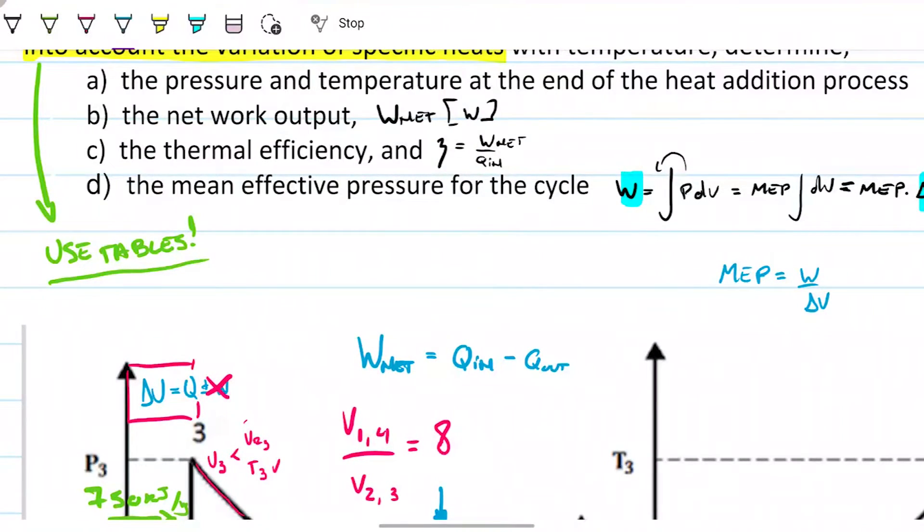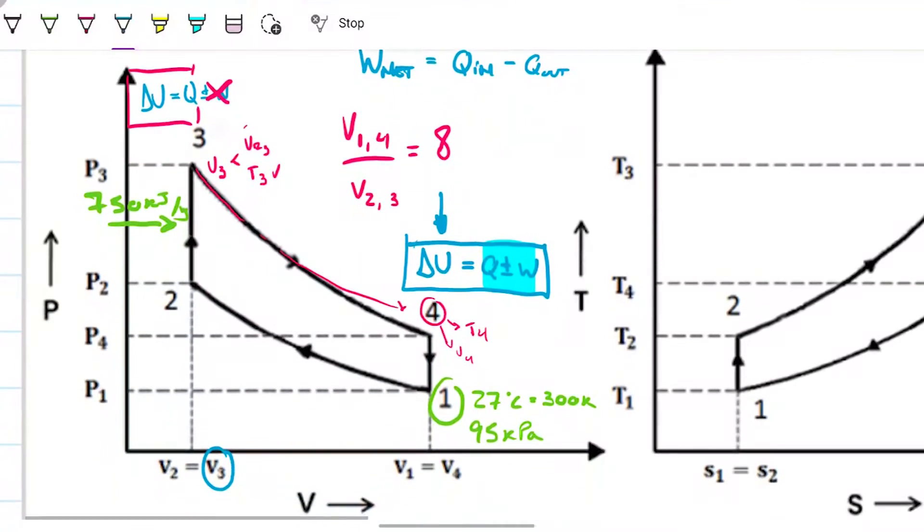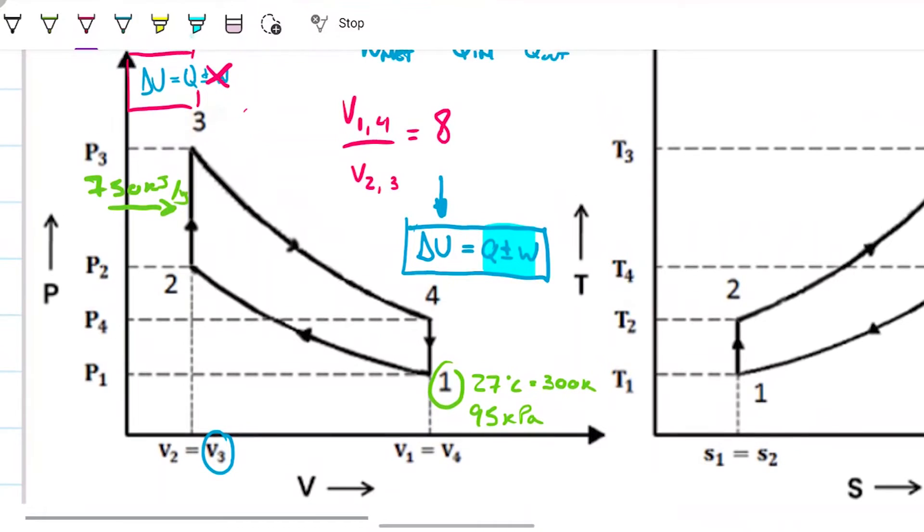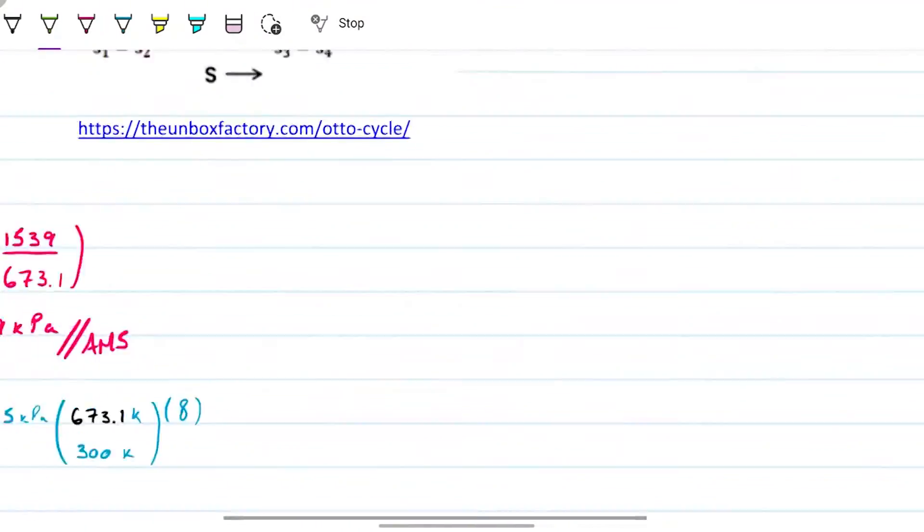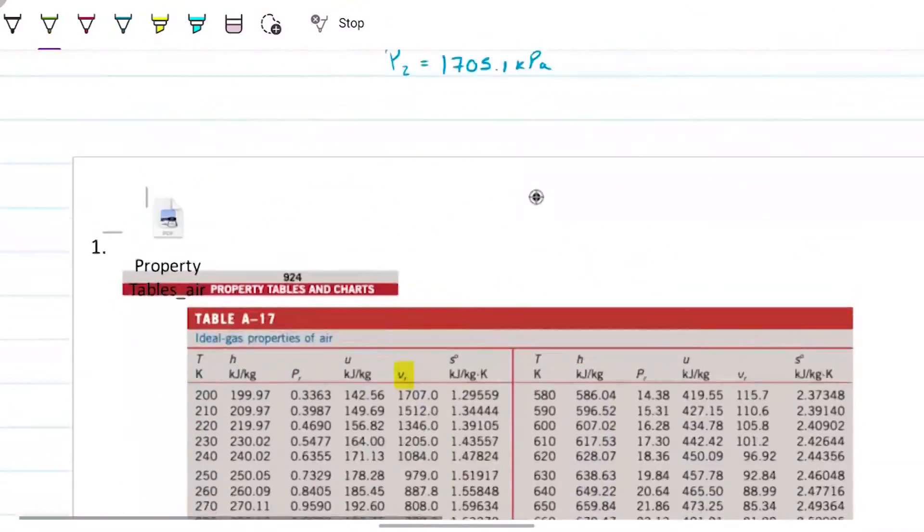Beautiful. Next, what is the net work output? We know basically almost everything we need. We need to know what is the Q leaving, Q out. To find Q out, once again, there's no change in volume from 4 to 1. If there's no change in volume, there's no work. So therefore, change in internal energy equals Q. So I know U₁, I know U₄, that's easy. We just need to subtract those two guys to find what is the Q that's leaving this system. It will simply be the difference between U₁ and U₃. Beautiful. So if that's the case, my U₁ is 214, and my U₄, never grabbed U₄, that's silly of me.